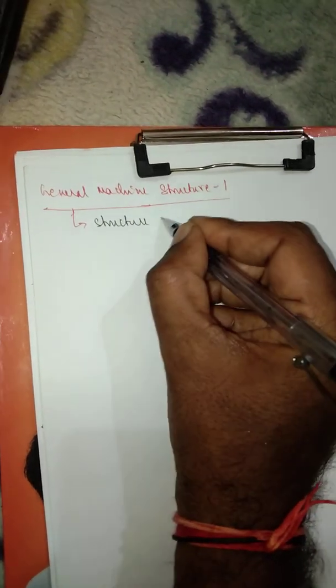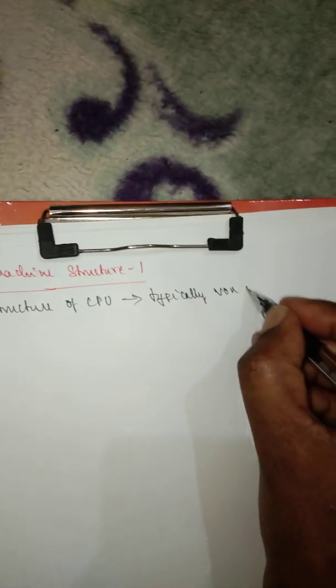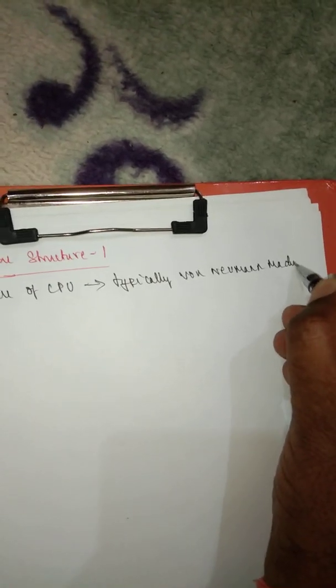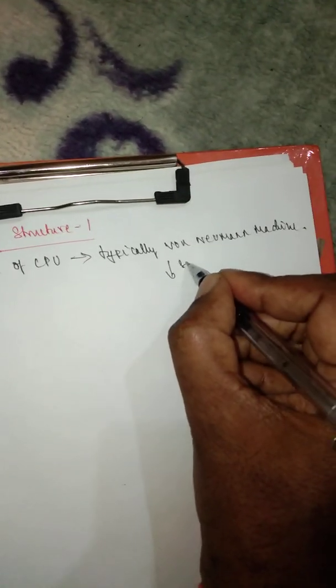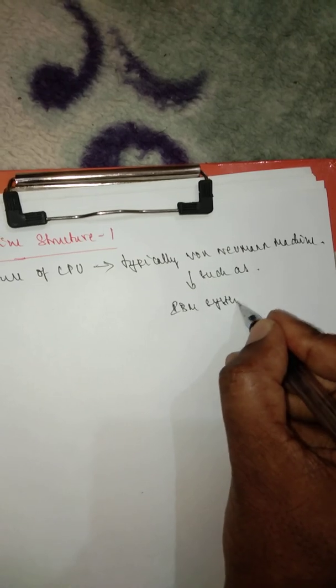Welcome all. Today we will be discussing about general machine structure. This structure — the structure of the CPU — is typically called as the von Neumann machine, such as IBM System 360.